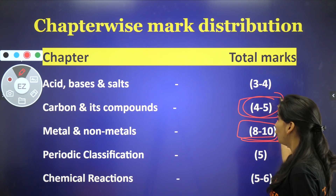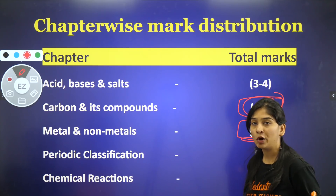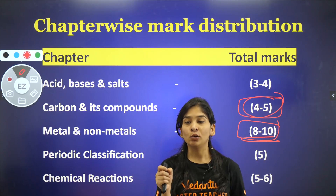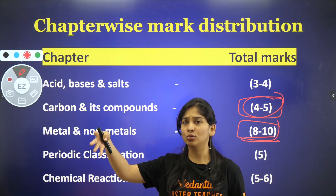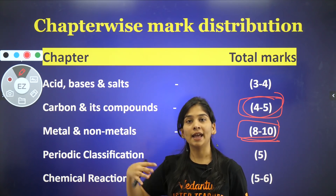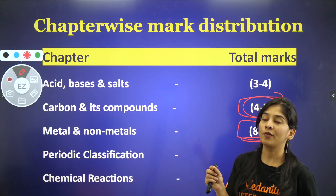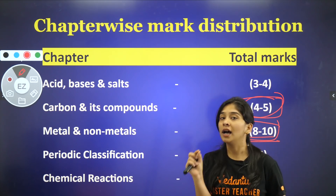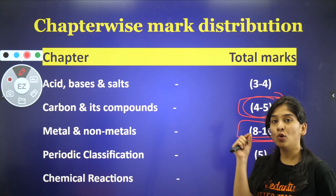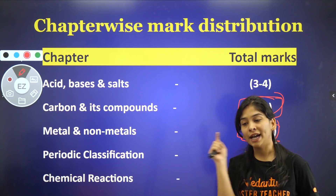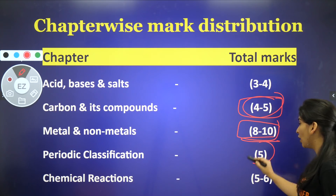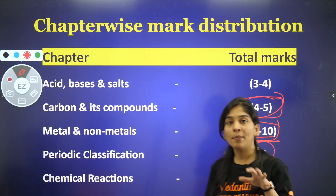Uske baad, Carbon and its Compounds mein se four to five marks hain generally. One three-mark question definitely comes — the type where 'X substance goes through reaction Y, forms Z, then Z forms something, identify X, Y, Z' — this type of question generally comes. So pay a lot of attention on types of reactions so that you are able to do certain questions.